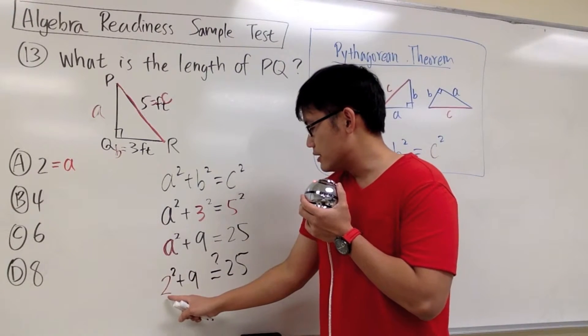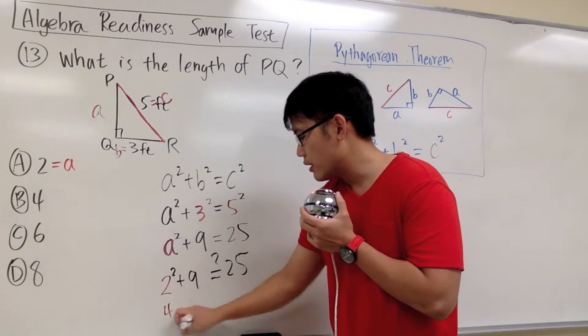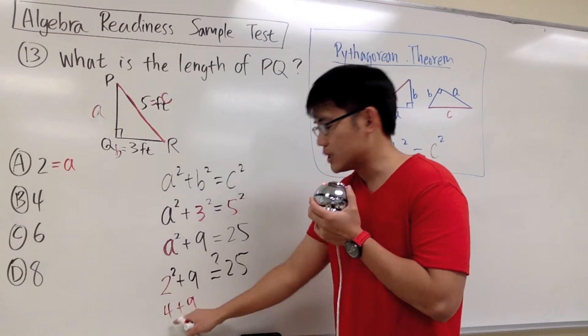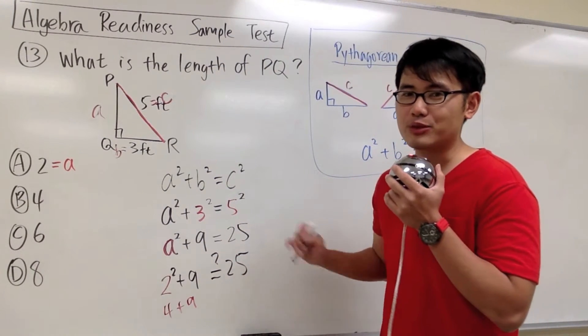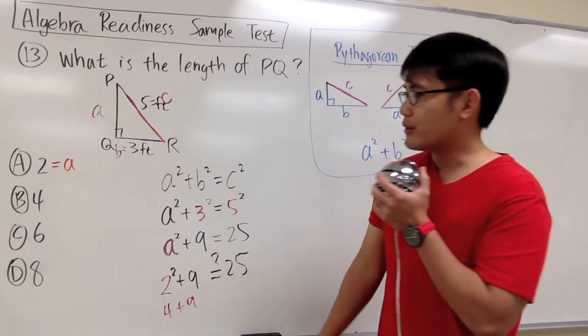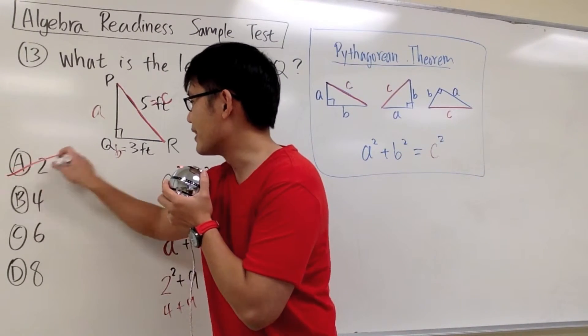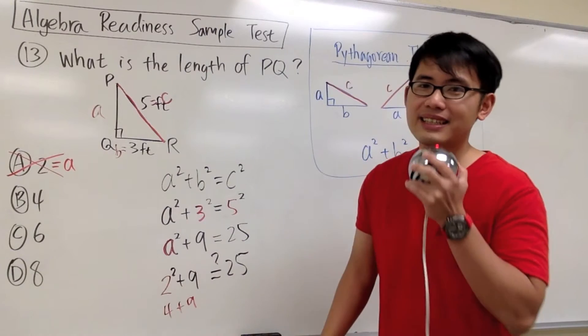Let's see. This is 2 squared, that will give us 4, and then we add 9 to that. What's 4 plus 9? That's 13. Of course, 13 is not the same as 25. So we know that capital A right here, it's not the answer.